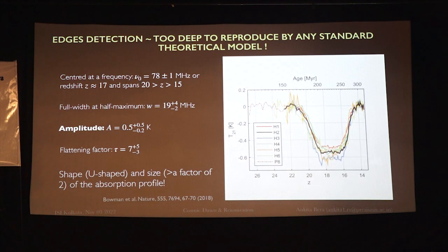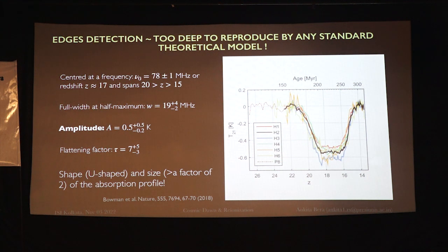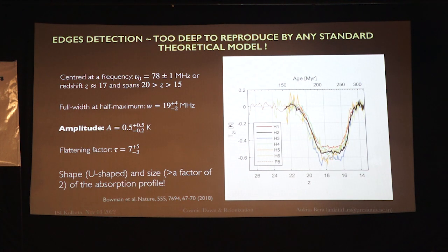To check against observations, we have considered the EDGES observation. There are lots of discussions and debates regarding this observation because the absorption depth of this profile is almost two times larger than the strongest prediction. It requires some exotic physics like the interaction between dark matter and baryons, or the presence of a radio background.